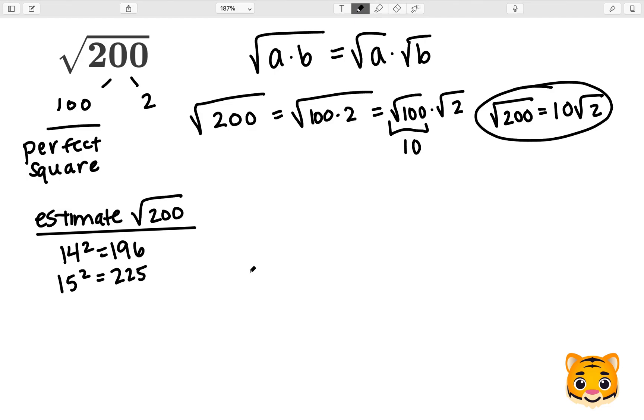Because 200 lies between 196 and 225, we can write the following inequality. The square root of 196 is less than the square root of 200, which is less than the square root of 225.